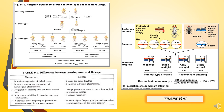The frequency of crossing over can never exceed 50%. Linkage groups can never be more than the haploid chromosome number. Crossing over increases variability by forming new gene combinations. Linkage reduces variability because the same genes are transferred from parent to offspring. Crossing over provides equal frequency of parental and recombinant types in test cross progeny, whereas linkage provides higher frequency of parental types than recombinant types in a test cross.